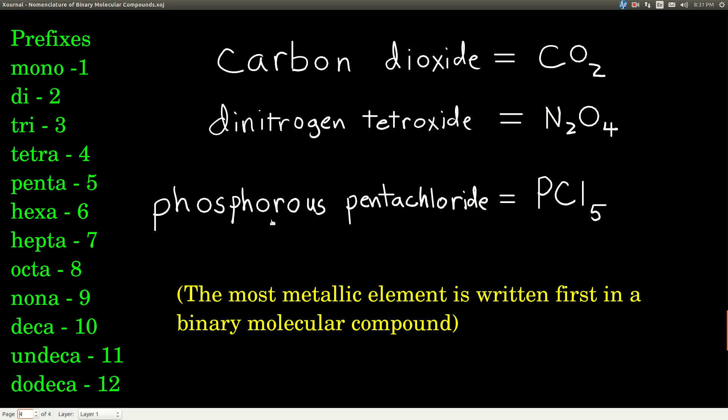Phosphorus pentachloride. Phosphorus is P. No prefix, so that means there's just one. Penta is five. Chloride is chlorine, so five chlorines.